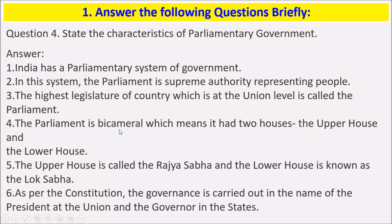Bicameral means it has two houses — the upper house and the lower house. The upper house is called the Rajya Sabha and the lower house is known as the Lok Sabha. As per the Constitution, governance is carried out in the name of the President at the union level and the Governor in the states.